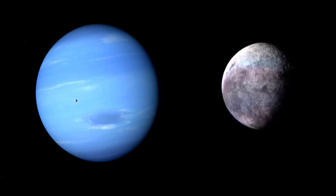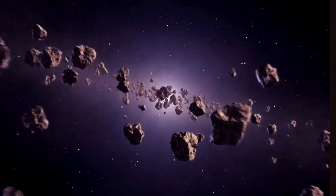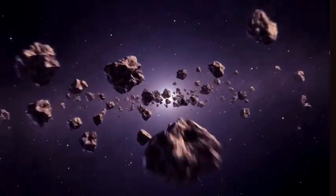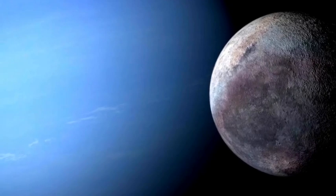This reverse orbit shows that Triton was not always associated with Neptune, and according to researchers, it was trapped by Neptune's gravity from the Kuiper belt almost millions of years ago.